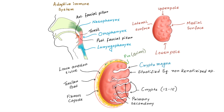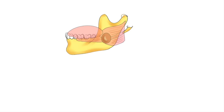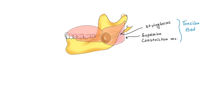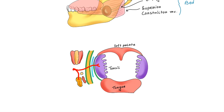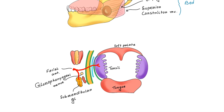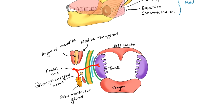The two muscles that mainly form the bed of the tonsil are the superior constrictor muscle and the styloglossus muscle. The structures related to the bed of the tonsil are the styloid process when enlarged, then the glossopharyngeal nerve, facial artery, submandibular salivary gland, posterior belly of digastric muscle, medial pterygoid muscle, and angle of mandible. The upper pole extends into the soft palate including the supratonsillar fossa — a potential space — and the lower pole is attached to the tongue and includes the anterior tonsillar space.